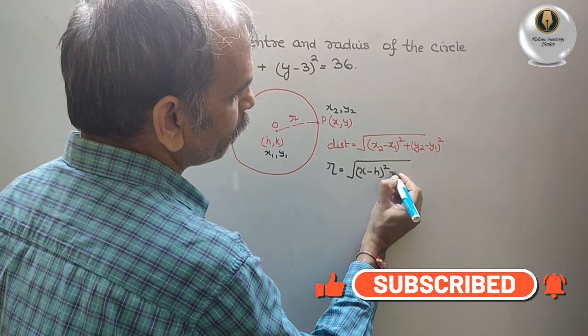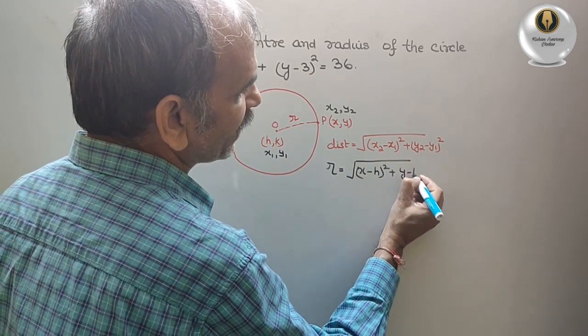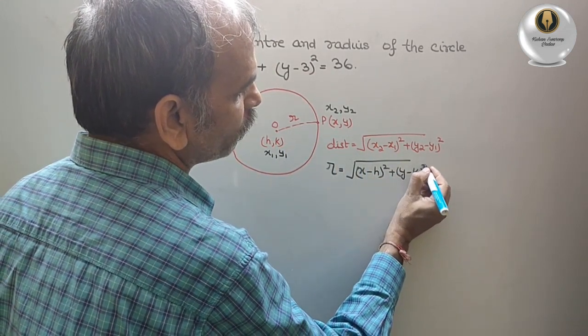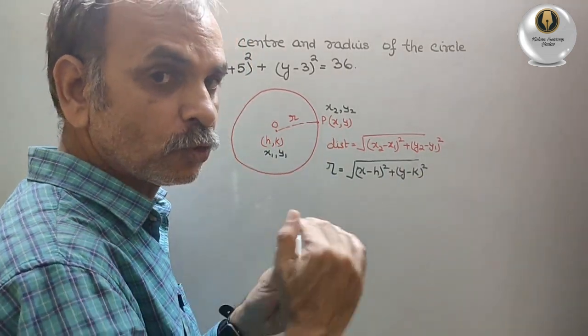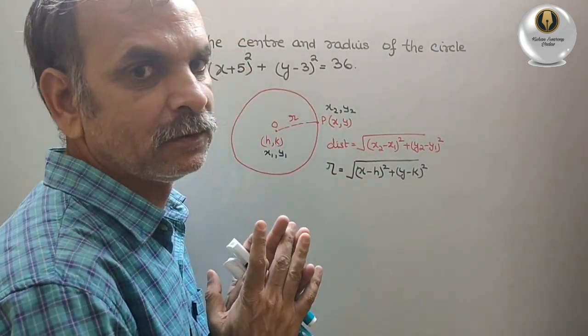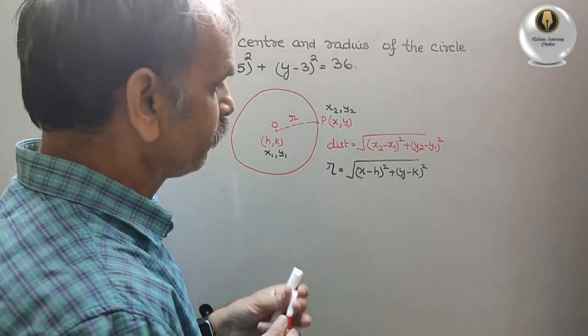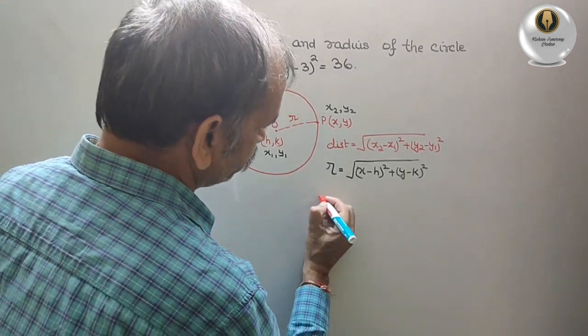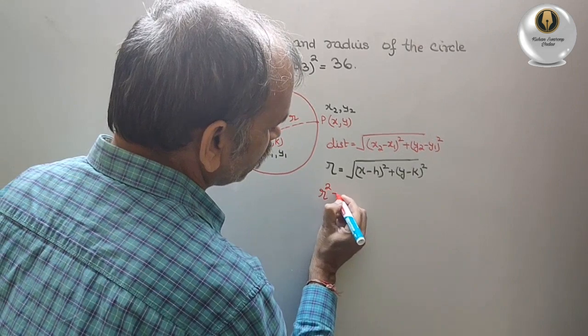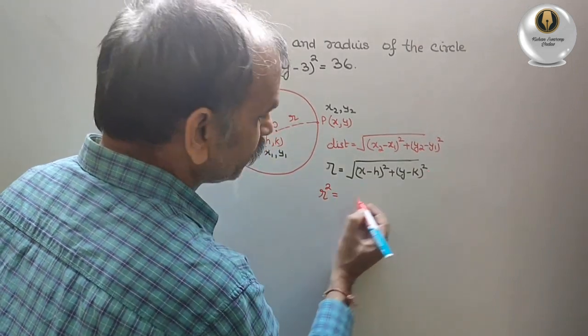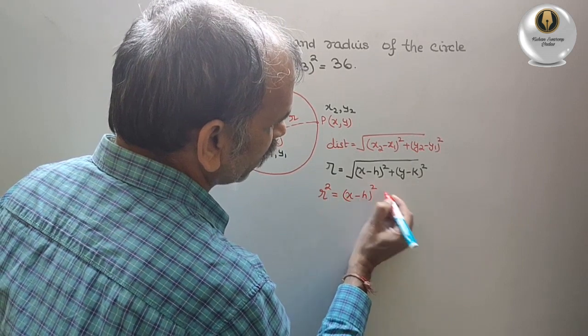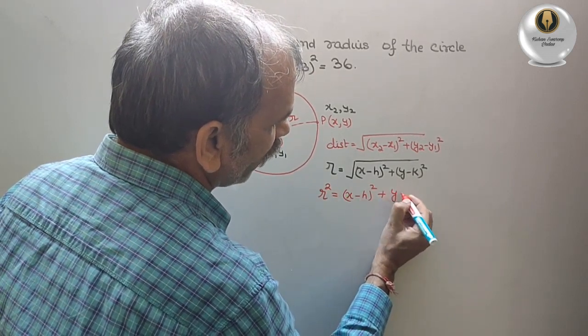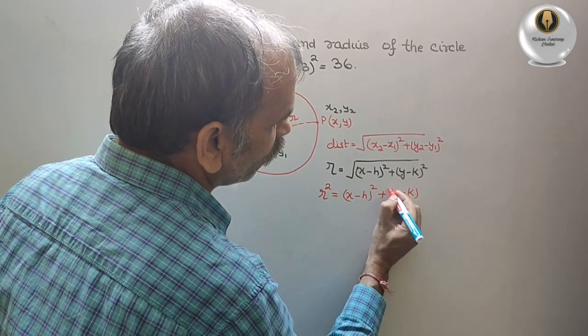Now if you square both sides we will get what? r² that is equal to (x - h)² plus (y - k)². So this is your standard circle equation.